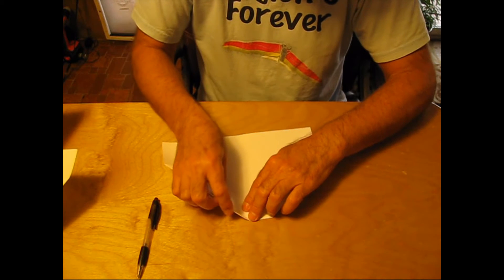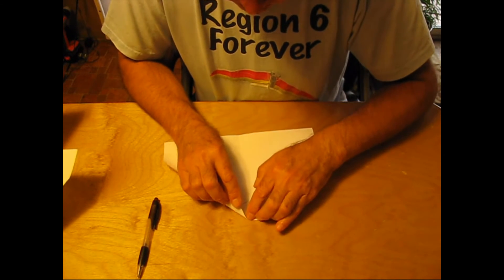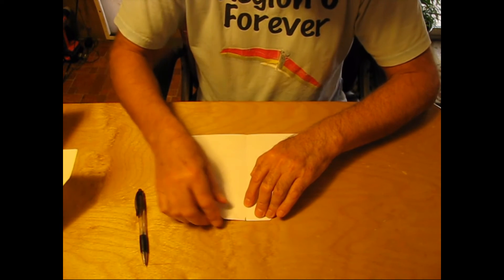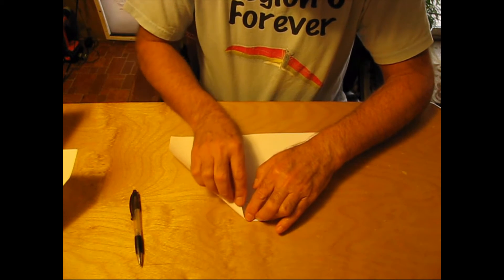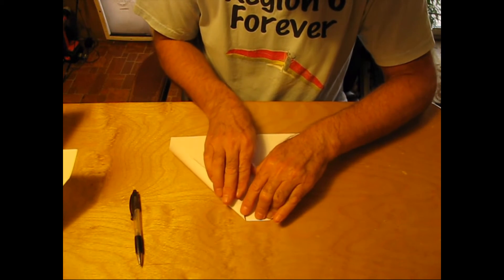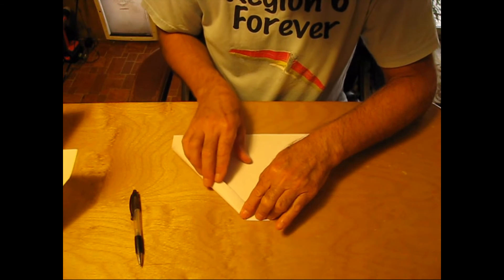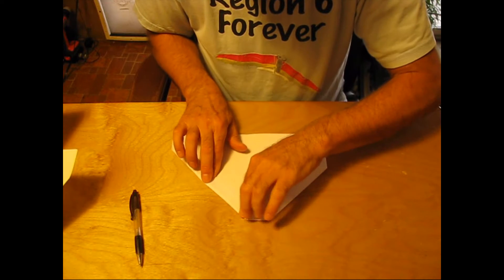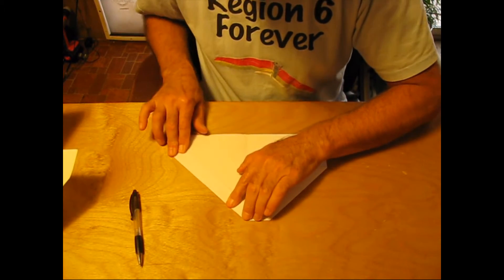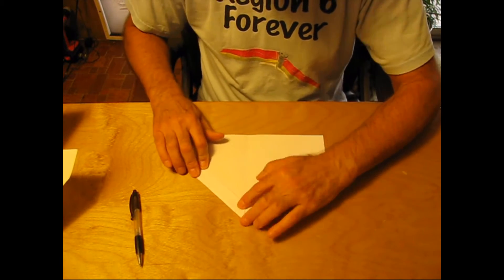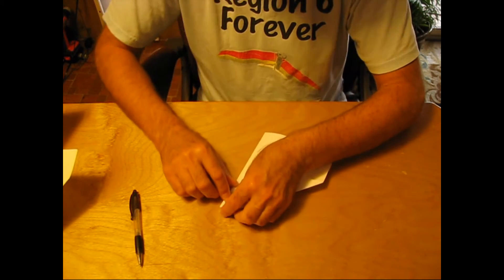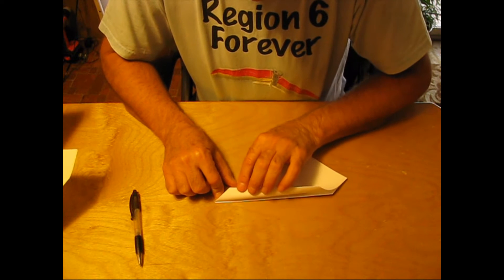Next fold is again, right up here at the point and I actually like to make a line because my eyes are kind of getting rough. So I can see where I'm going. And I line it up with the previous fold underneath. And then back fold again and we'll duplicate that fold.